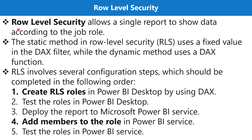Before configuring row level security, let me quickly explain what it is. Row level security allows a single report to show data according to the job role. For example, in our Maven Market report, if we have six or seven regions and each region has a manager who should only see their region's data, we can achieve that through row level security. There are two ways to implement it: a static method and a dynamic method.